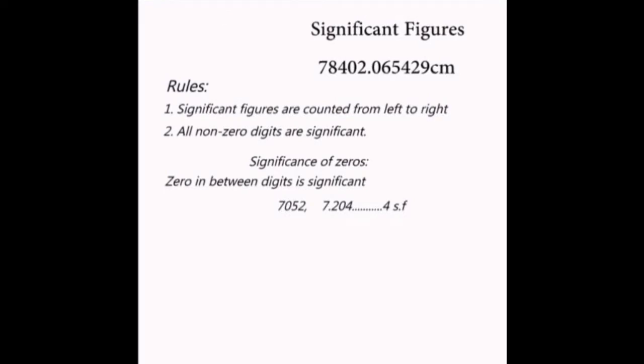If a zero occurs at the right end after a decimal, it is significant. For example, 5.0 has two significant figures.